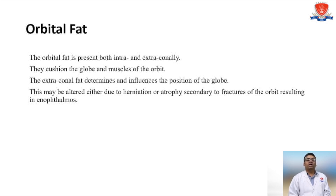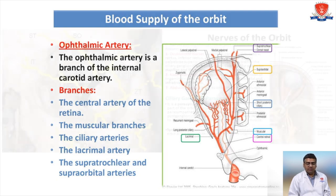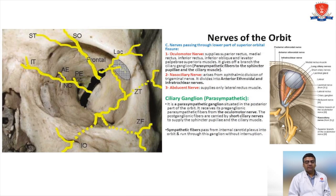Vascular supply: the ophthalmic artery is a branch of the internal carotid artery. Branches of the ophthalmic artery include the central artery of the retina, muscular branches, ciliary arteries, lacrimal arteries, and supratrochlear and supraorbital arteries. Nerves of the orbit include the oculomotor nerve, nasociliary nerve, and abducent nerve. The ciliary ganglion also receives fibers from the internal carotid artery into the orbit.